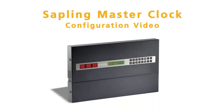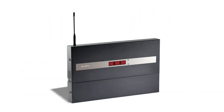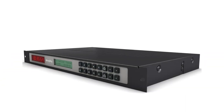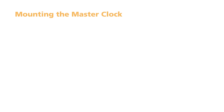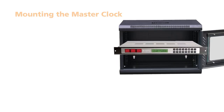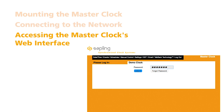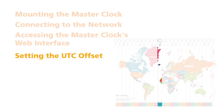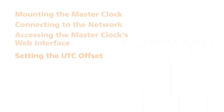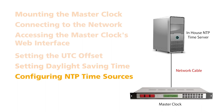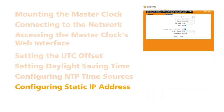Sapling offers different MasterClock models with a variety of optional features and upgrades to meet a diverse range of applications. When configuring your MasterClock, certain settings are mandatory while others are optional. This video will serve as your guide through programming all mandatory settings, including mounting the MasterClock, connecting to the network, accessing the MasterClock's web interface, setting the GMT or UTC offset, setting daylight saving time, configuring internal NTP time sources, and configuring a static IP address.